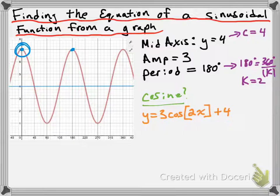In fact, there are other cosine functions that would also be correct. For example, you could give it a negative 3 for your a value, in which case you'd want to shift it 90 degrees to the right because of the fact that the first minimum point occurs right there. But let's deal with a sine function.